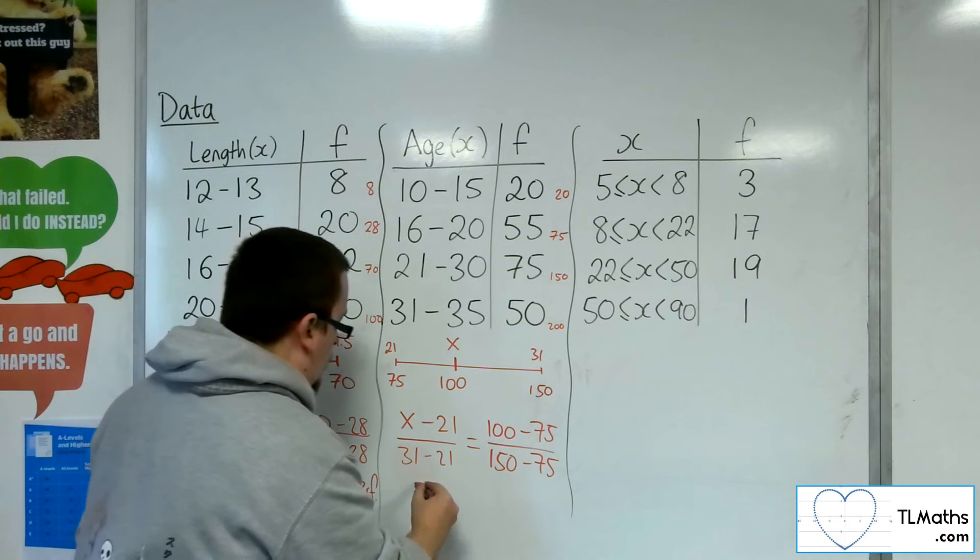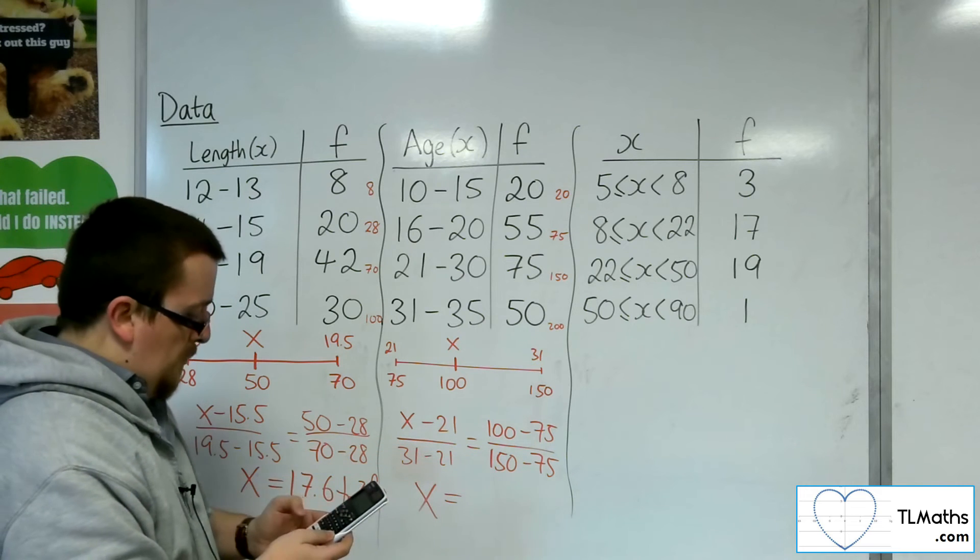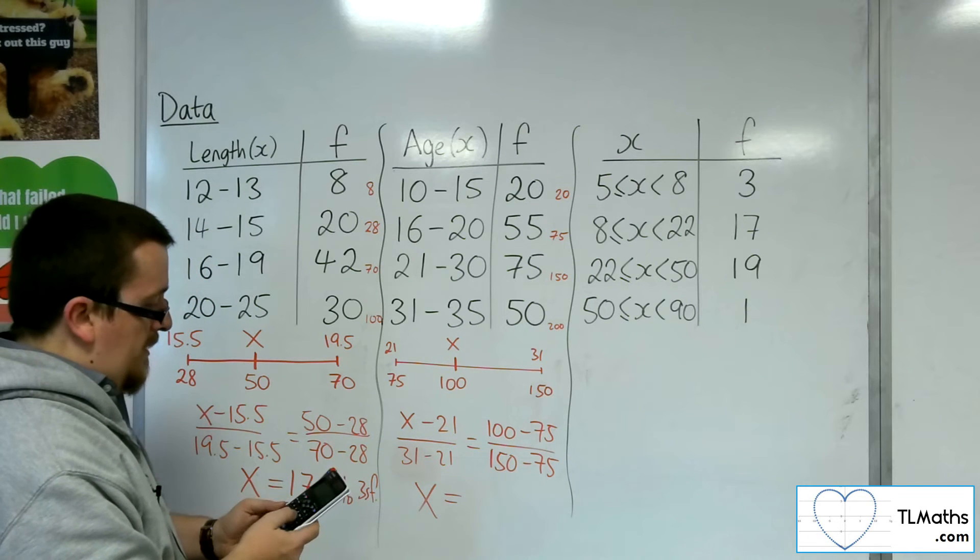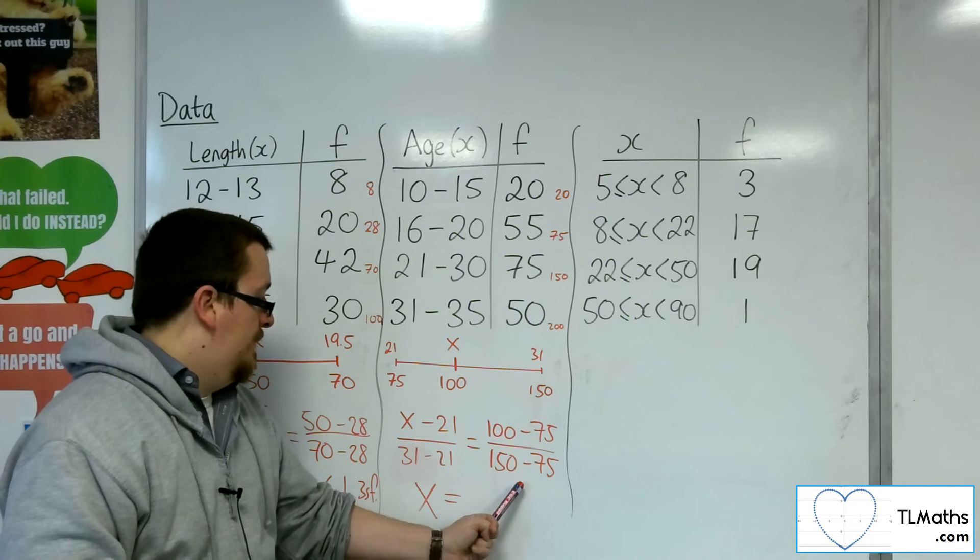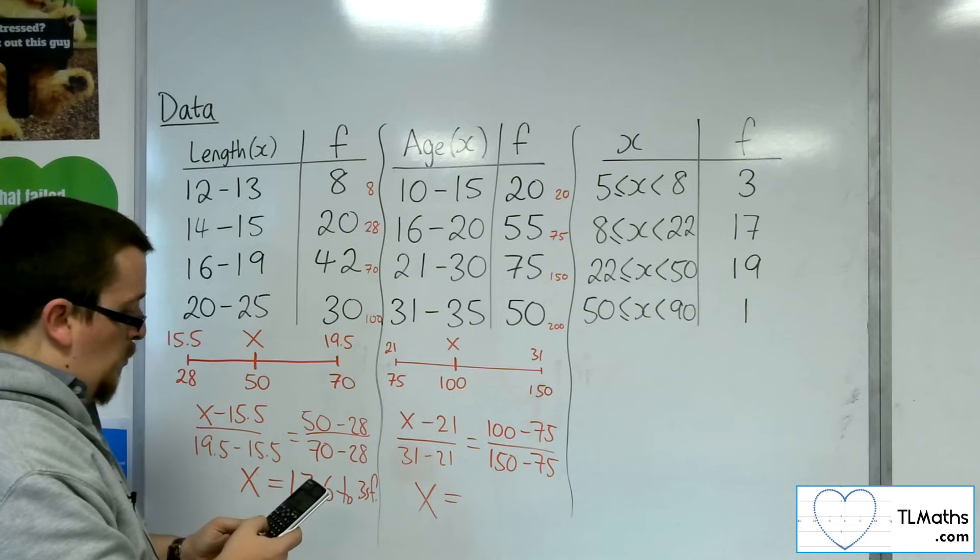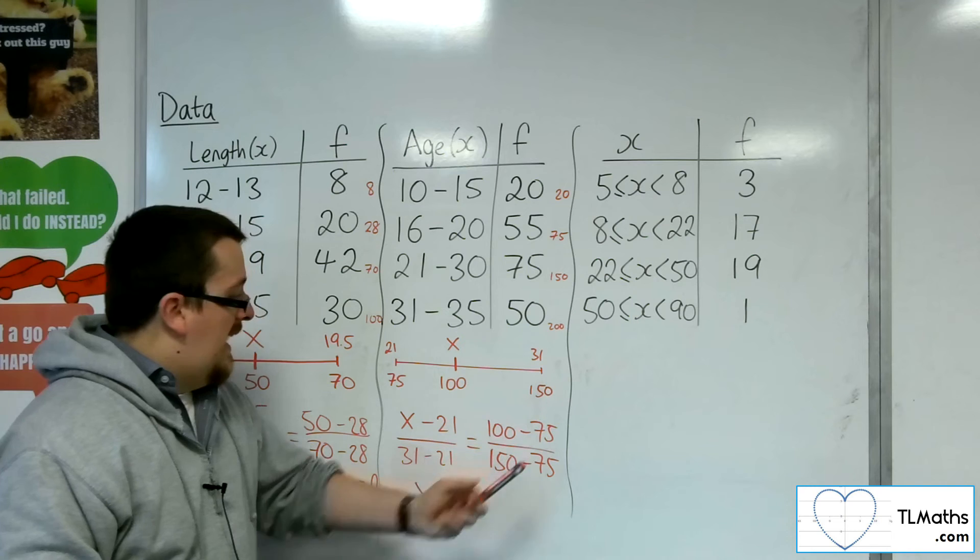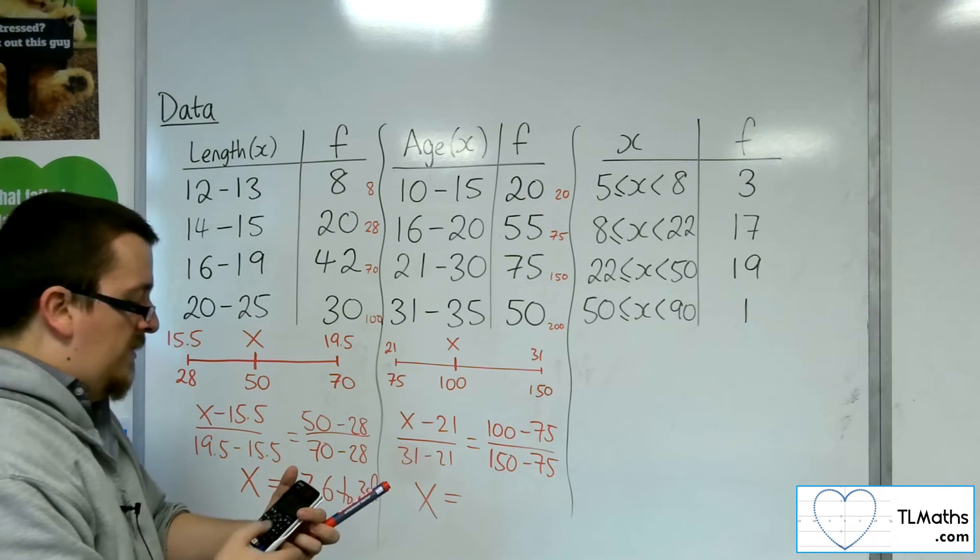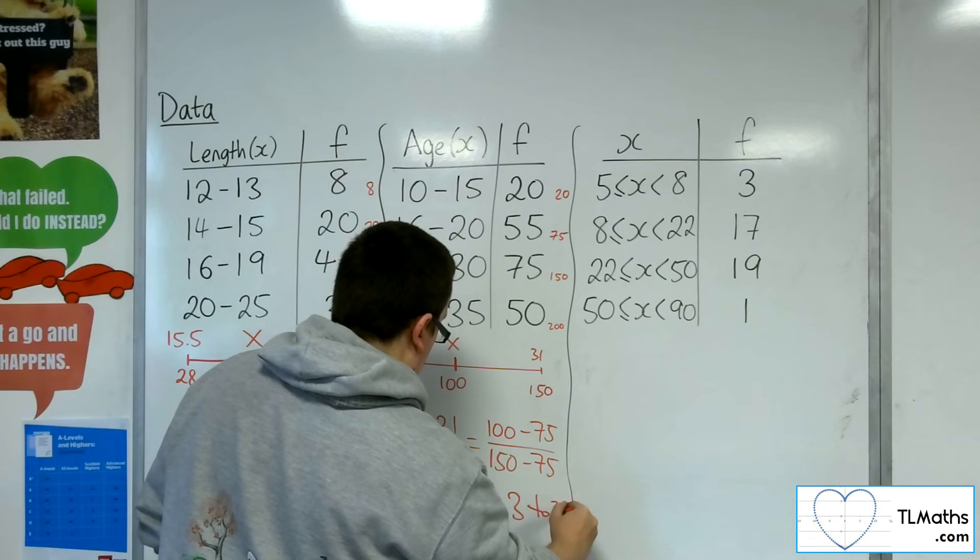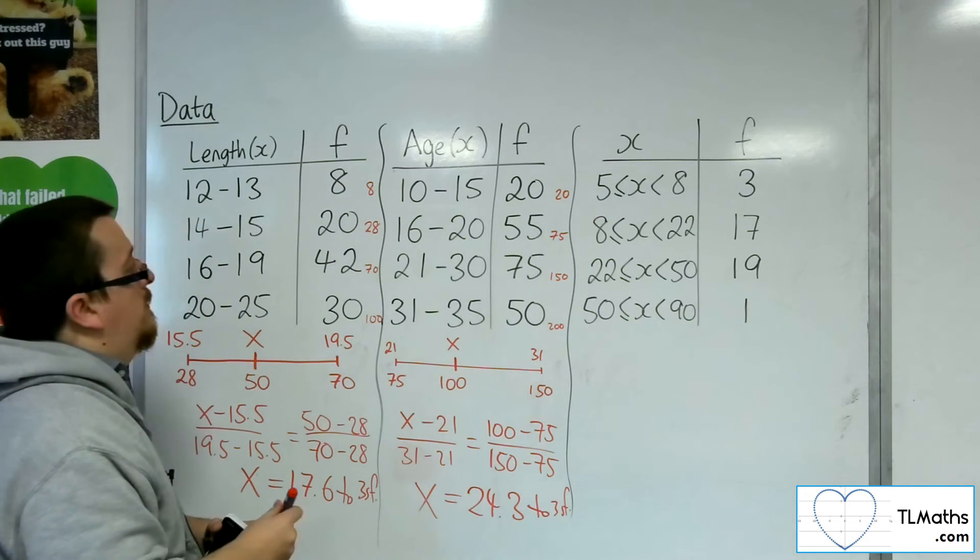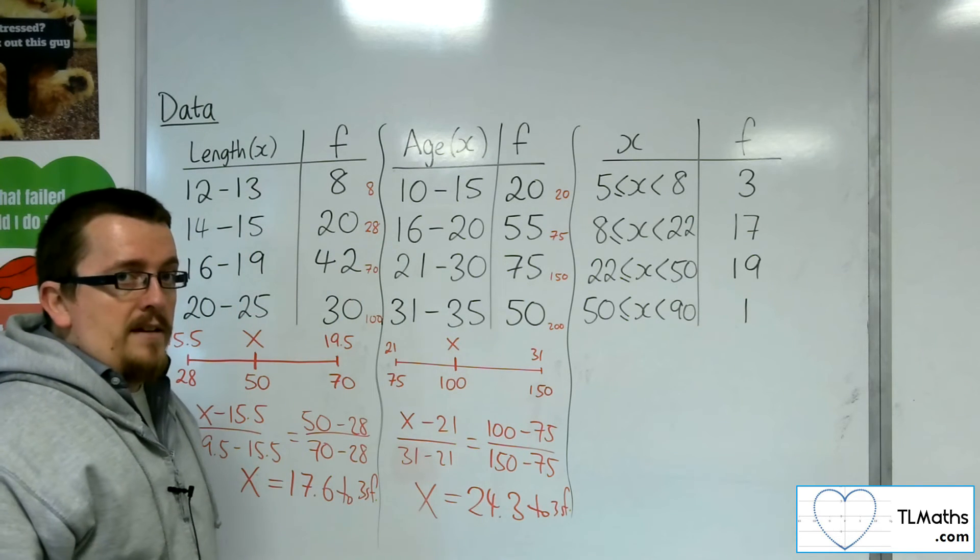This gives me an equation to solve to find x. So, first of all, 100 take away 75 over 150 take away 75, and that gives me 1 third. Multiply up by 31, take away 21, so 10 thirds. Add the 21, and we get 73 thirds, or 24.3 to 3 sig fig. So that is an estimate for the median for the second set of data.